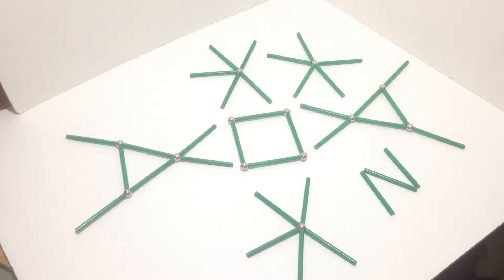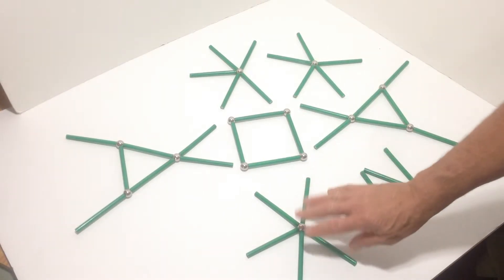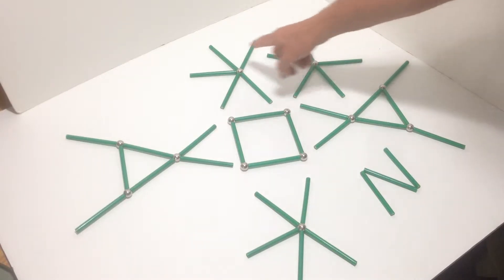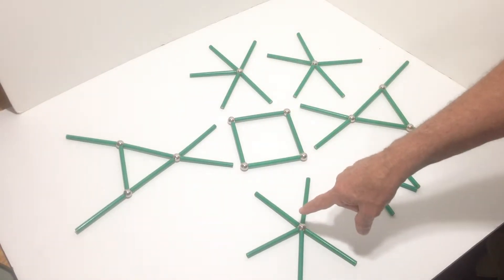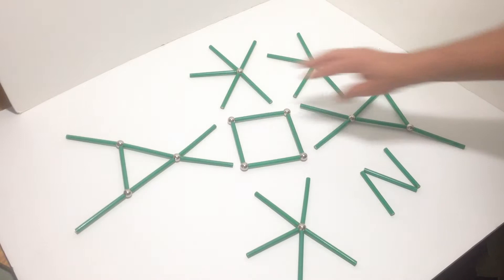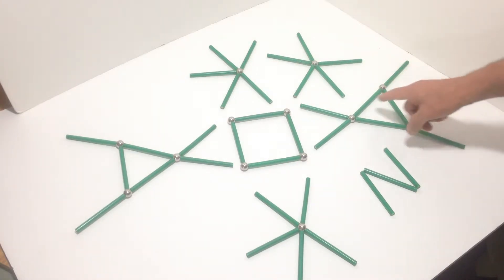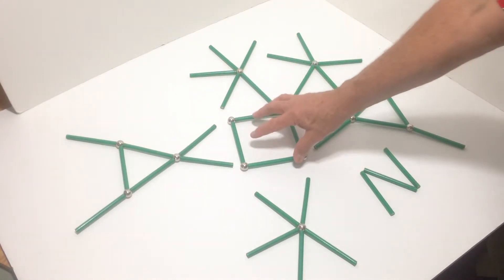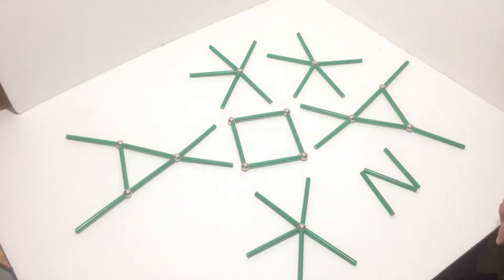To build a vector equilibrium you need these three sub-assemblies with one steel ball and five sticks each, two sub-assemblies configured like this, one square in the middle, and three extra sticks.